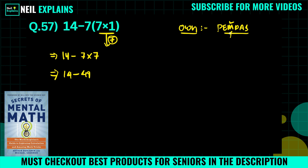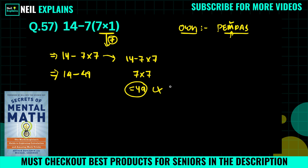A common mistake sounds like this: 14 minus 7 equals 7, then 7 times 7 equals 49 — but that is NOT the right answer. Always follow the order of operations and PEMDAS.